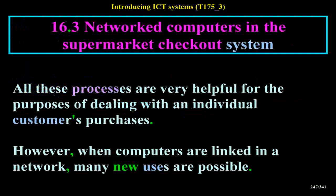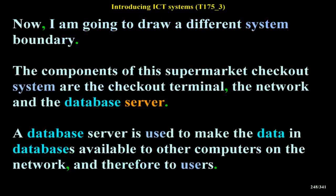Network Computers in a Supermarket Checkout System: All these processes are very helpful for dealing with an individual customer's purchases. However, when computers are linked in a network, many new uses are possible. I am going to draw a different system boundary. The components of this Supermarket Checkout System are the checkout terminal, the network and the database server. A database server is used to make the data in databases available to other computers on the network, and therefore to users.